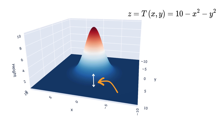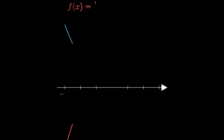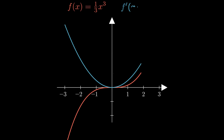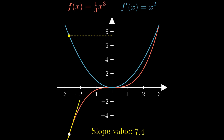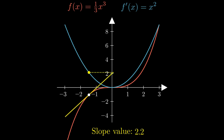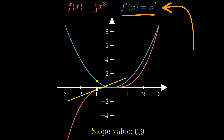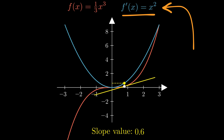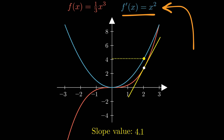Before we move further, let's think about something simpler. For a one-dimensional function, which is a curve on a 2D plot, the gradient is just the slope of the curve at any point. It tells us how steep the curve is and in which direction it is going up or down. We find this slope using the derivative of the function. The derivative measures how much the function changes if we make a tiny step in the x direction. If the slope is positive, the curve is going up, and if it is negative, the curve is going down.